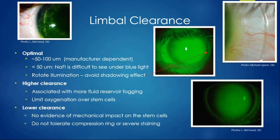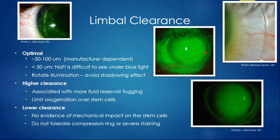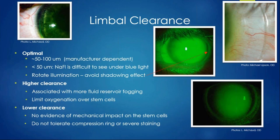Pay attention to where your light source is when evaluating limbal clearance. It's easy to see darkness on one side of the lens and think there's touch, when really the lens is just casting a shadow. Compare that to true limbal touch, which appears as a black ring on either side of the limbus. A nice faint green traveling over the limbus and onto the conjunctiva is beautiful and normal. Less than 50 microns is really hard to see even with the slit lamp, so sometimes I'll just dispense the lens and monitor for corneal health changes at follow-up.